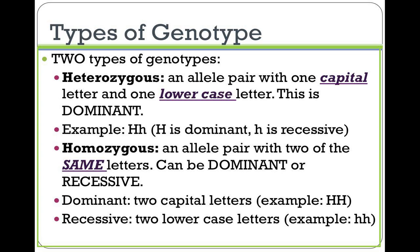Moving forward, there are two kinds of genotypes. One is heterozygous. Heterozygous is when you have alleles with one capital letter and one lowercase letter — this is dominant. Remember, the capital letter is dominant. Capital H, lowercase h is recessive. But remember, only one of these can be expressed in physical appearance, which is phenotype. So the capital H is dominant — heterozygous is going to be dominant.